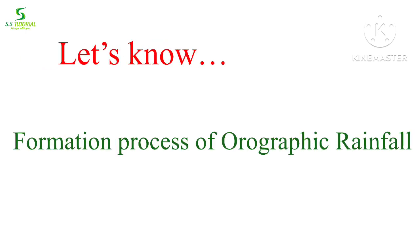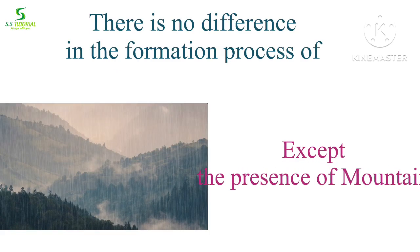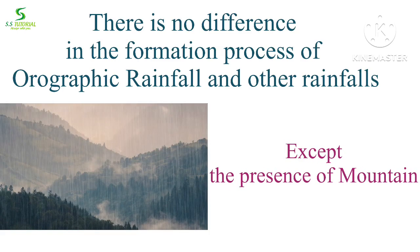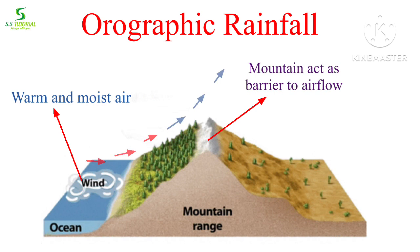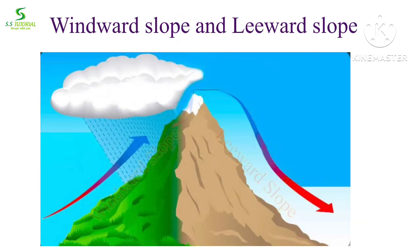Let's know how orographic rainfall occurs — that means the formation process. There is no difference in the formation process of orographic rainfall and other rainfalls except the presence of a mountain. In the case of orographic rainfall, the mountain forces moist air to rise upward. When a large amount of warm and moist air moves horizontally from sea to land, if any mountain or upland acts as a barrier to airflow, then because of initial momentum, air is forced to ascend. The wind-facing slope is called the windward slope.